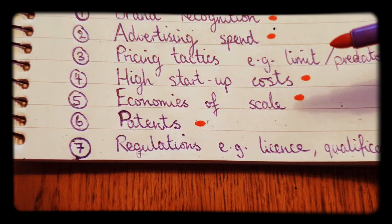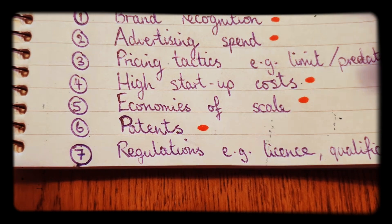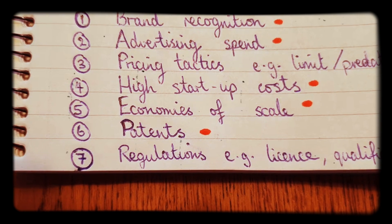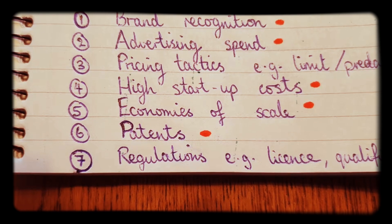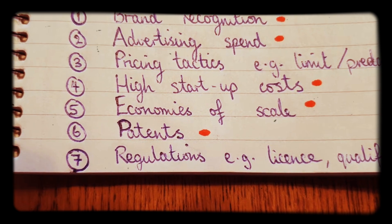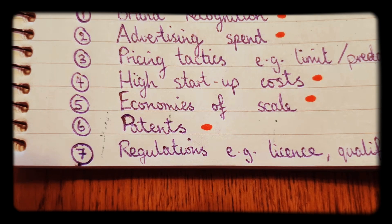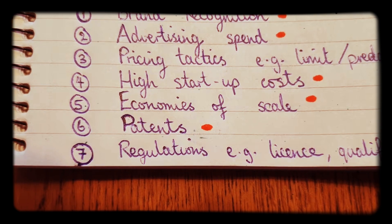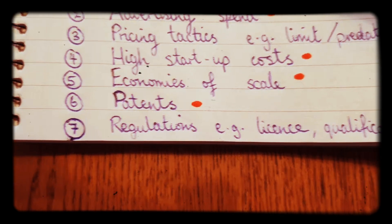Another barrier to entry can be patents. Patents are a type of legislation that prevents you from copying what your competitors are doing, whether it be a design, something they've invented, or even making something quite similar to what they're doing. That can make it very difficult to compete in a market, as you have to be more original and produce your own idea.